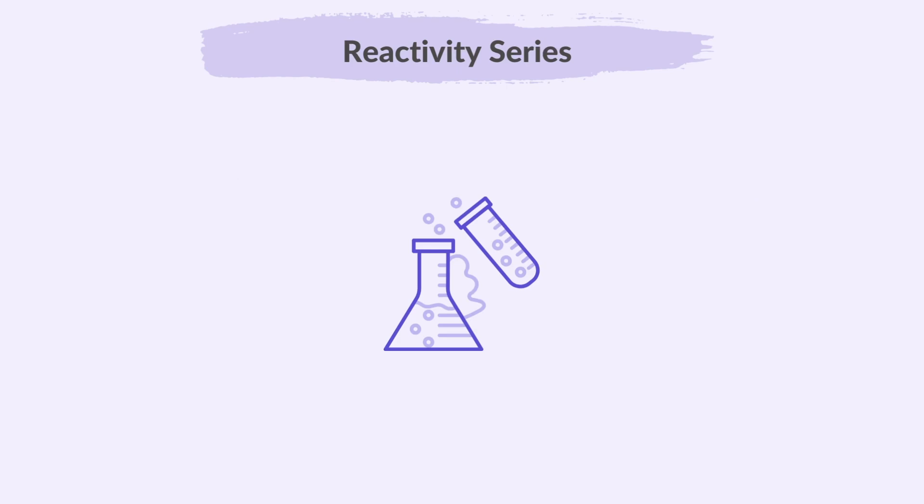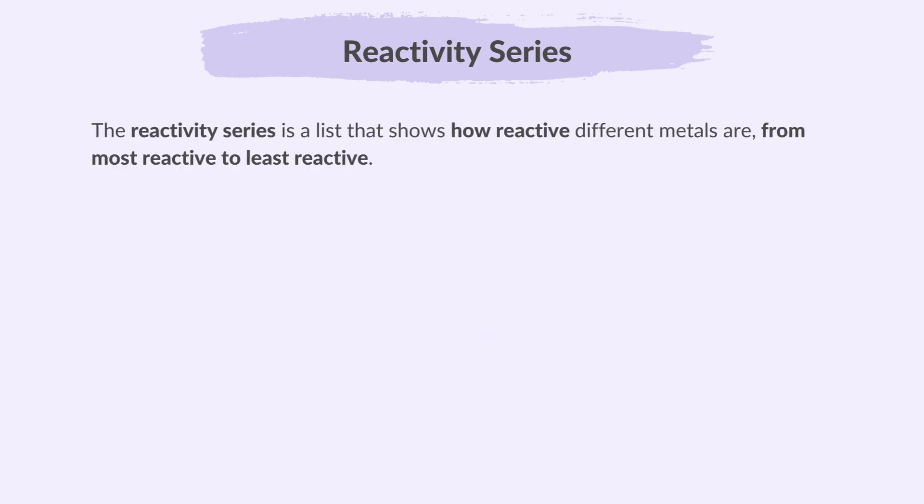Our first topic is the reactivity series. Remember in the previous video the reactions of metals with dilute acid, cold water, steam and oxygen? From these, we see that metals react at different rates. Some are more reactive than others. The reactivity series is a list that shows how reactive different metals are, from most reactive to least reactive.